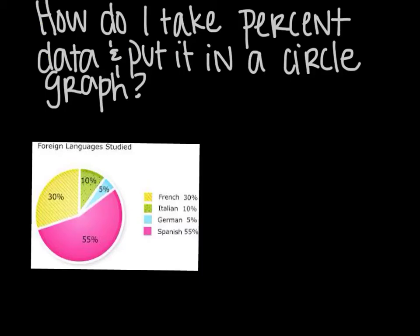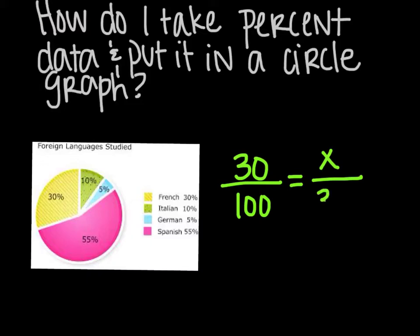First question is how do I take percent data and put it into a circle graph? And you will use proportions to do so. The first example will start with the French at 30%. So 30% is out of 100. So that's our first proportion. Equals x over, and we're trying to go to degrees. Think part to whole relationships. Degrees has 360.